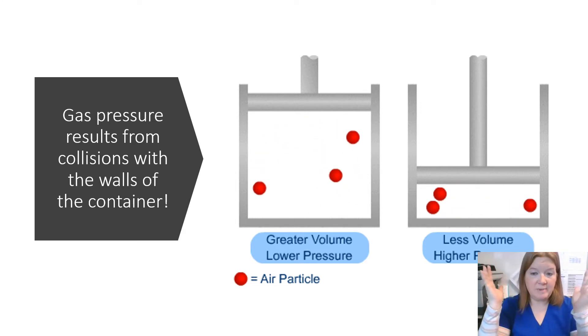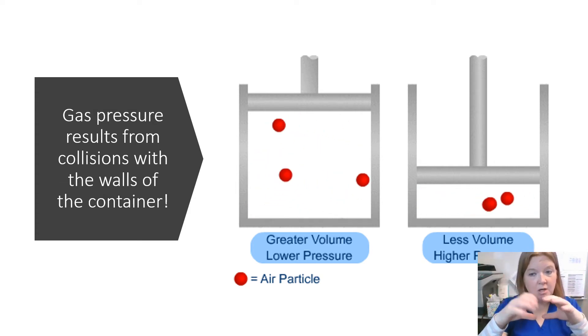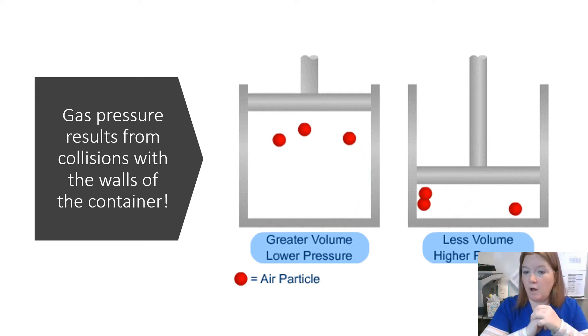If gas particles have a big space, they're going to have less pressure because they're bumping into the container less. If they have less space, they're going to have more pressure because they're bumping into the container more often.